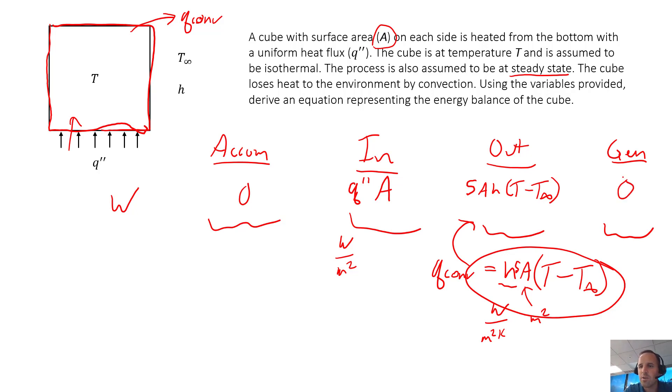To complete our energy balance, accumulation equals in minus out plus generation. This term is positive but it's actually going to be negative in our energy balance because we have energy leaving our system. So we get: 0 = q double prime A minus 5Ah times T minus T infinity.